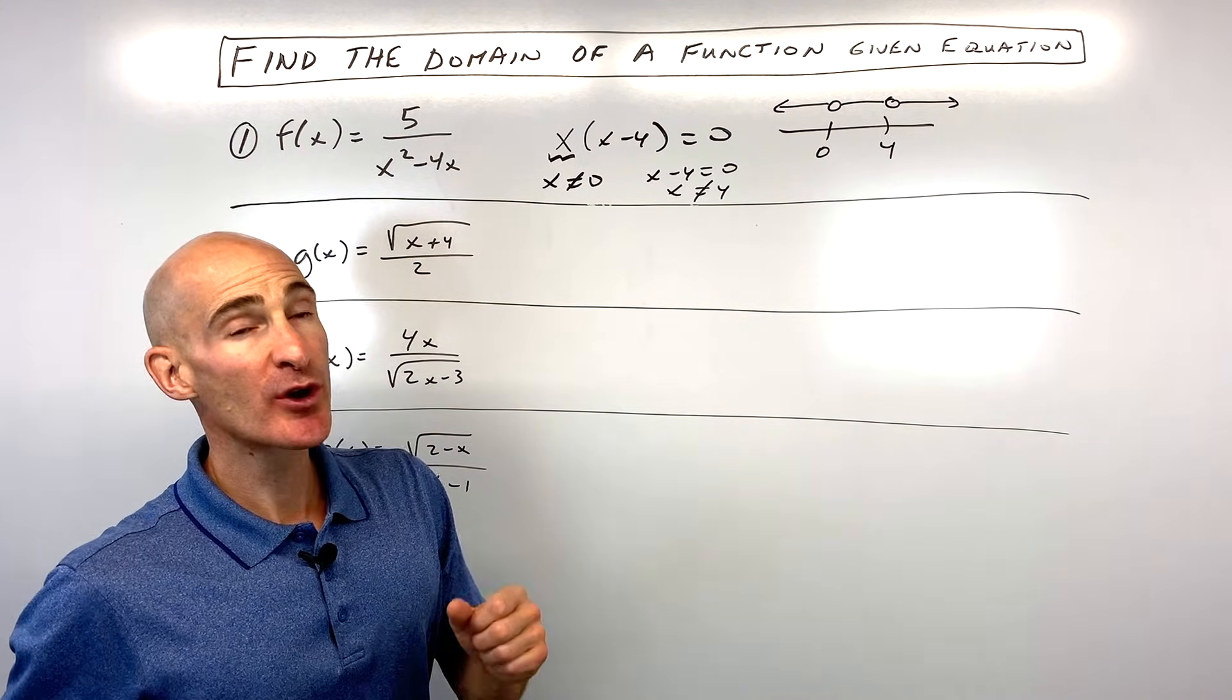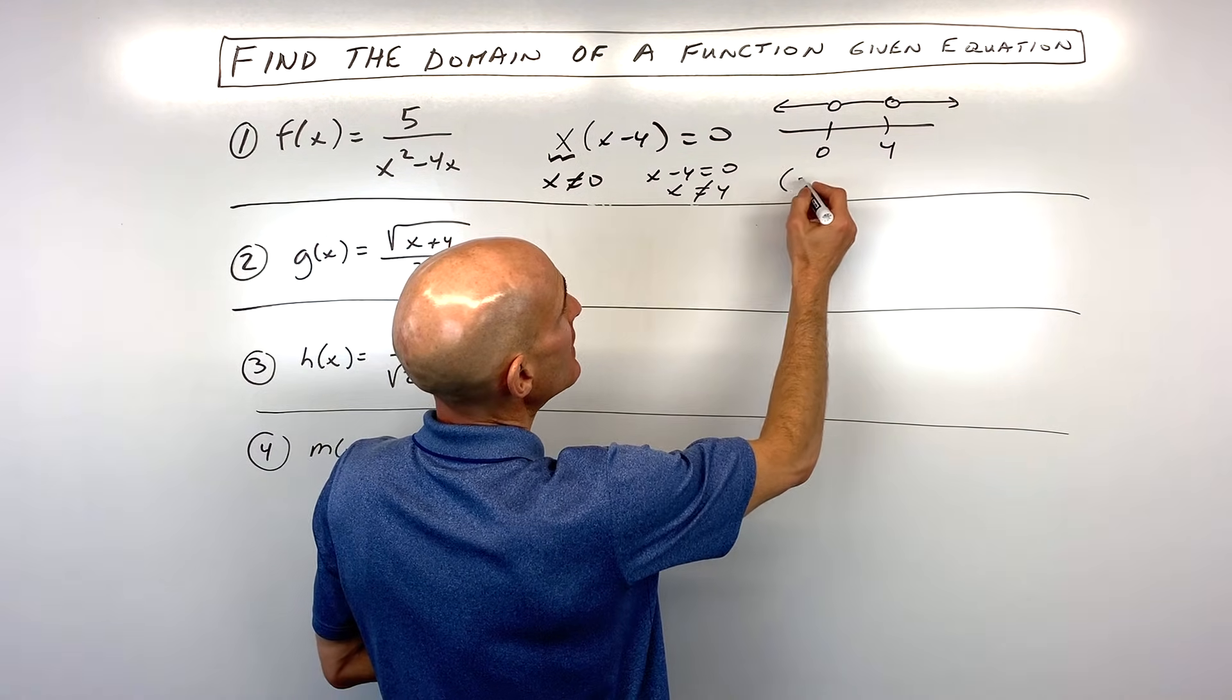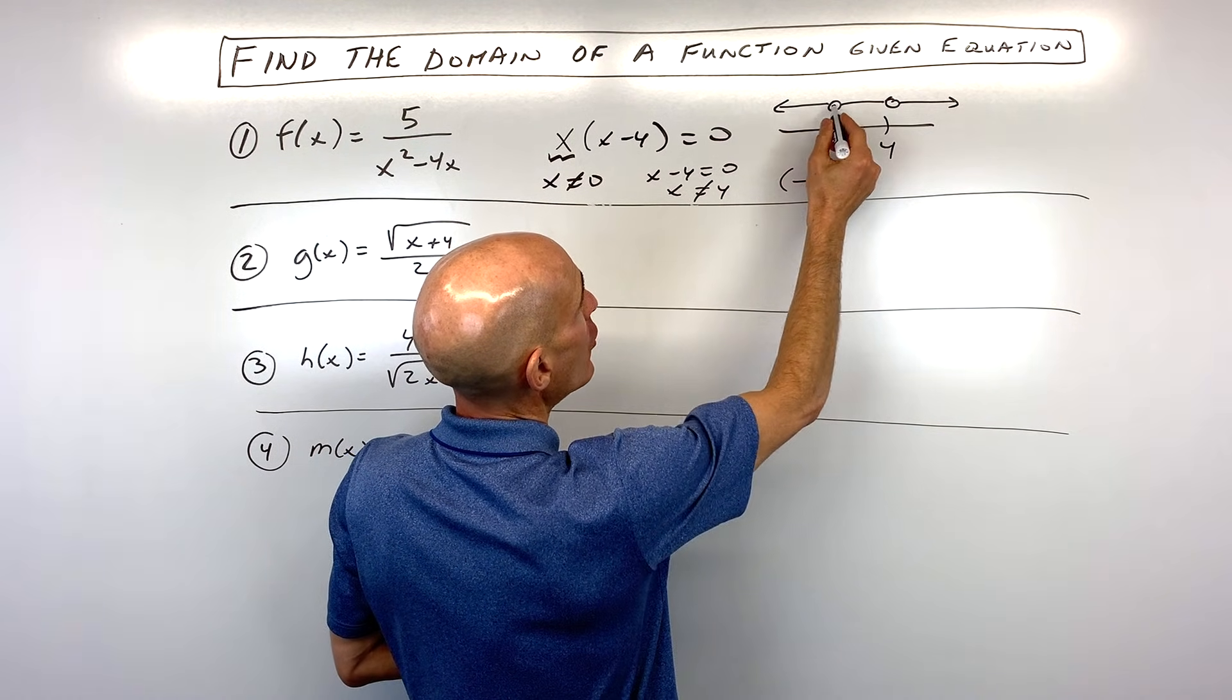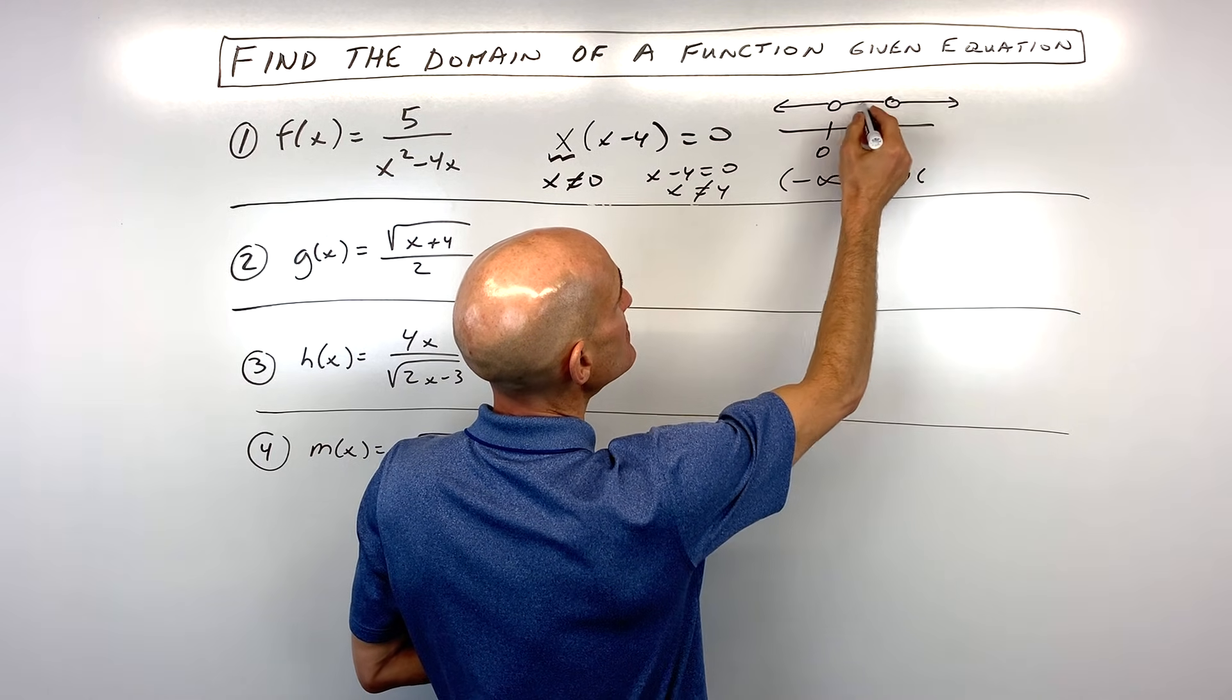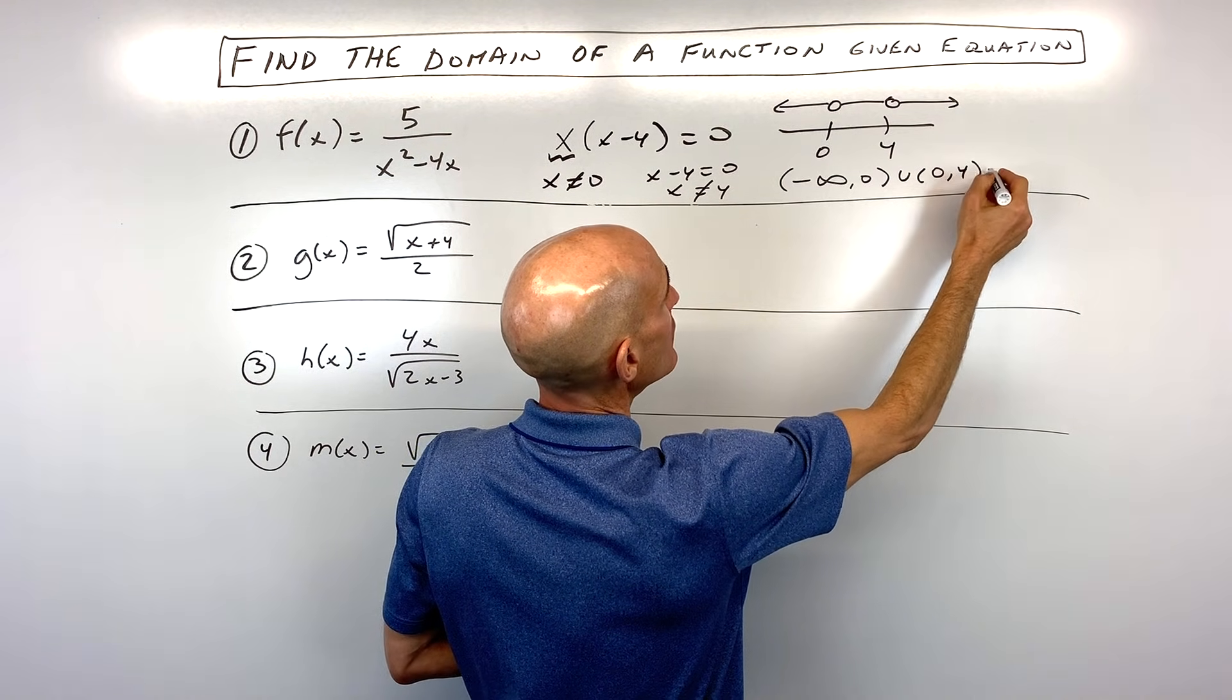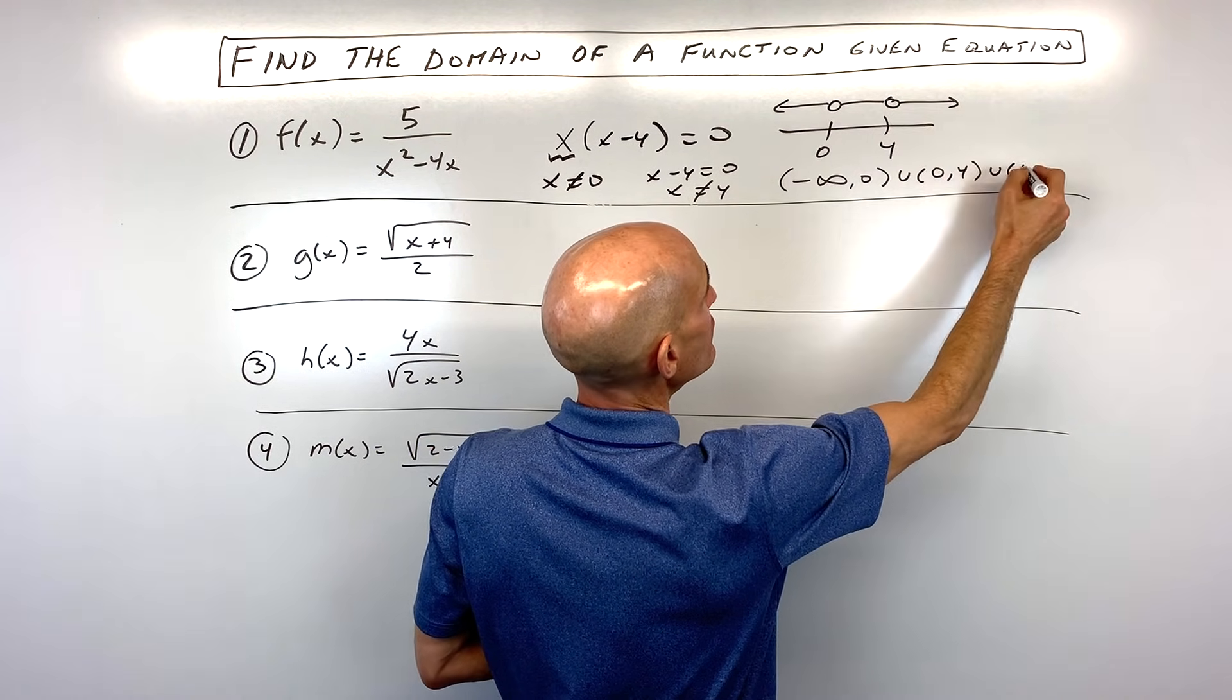So now what we're going to do is we're going to write it in interval notation. The domain is from negative infinity all the way up to zero, not including zero, union zero to four, union four to infinity.